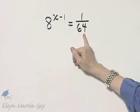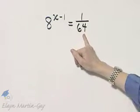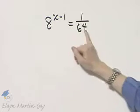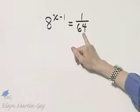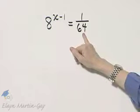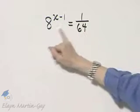If we can write the bases as the same, we can solve without logarithms. If we cannot rewrite each of these so that the bases are the same, we'll use logarithms to solve. Now notice,